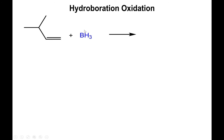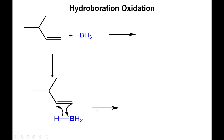In hydroboration, we attack the boron, which is electron deficient. Technically, what happens is a concerted process in which the alkene attacks the boron, but then this boron-hydrogen bond migrates to the opposite carbon of that alkene. In the process, you form an alkyl borane molecule.